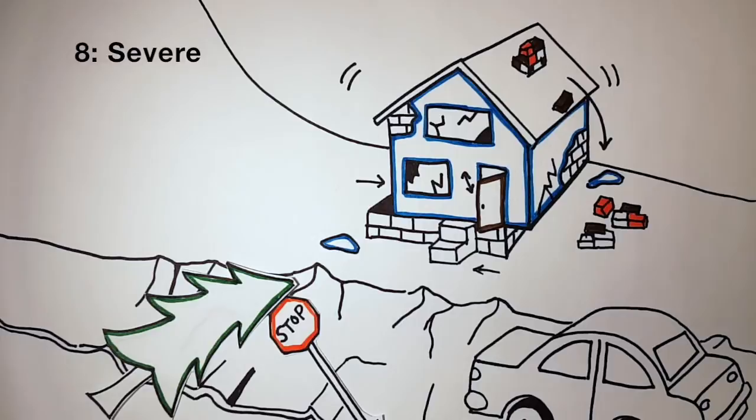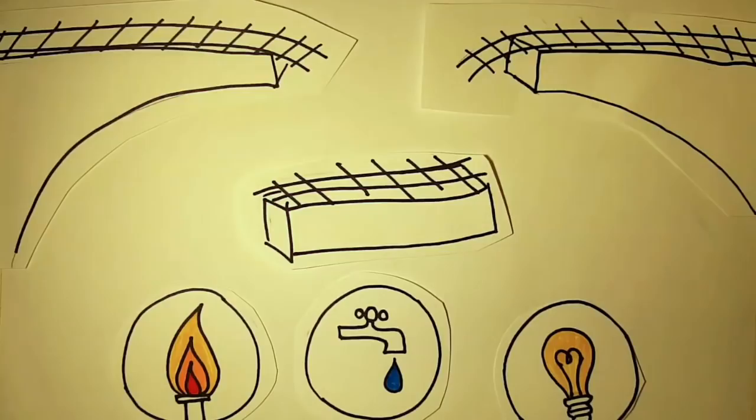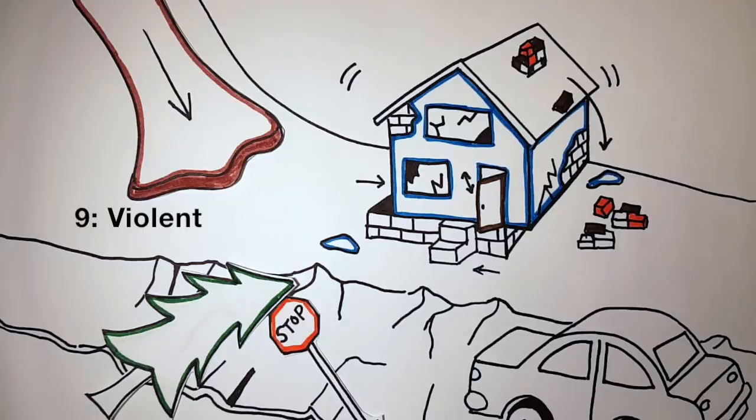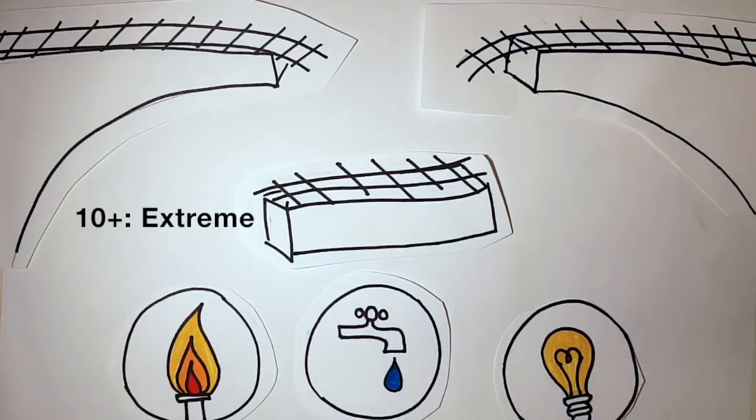Level 9: Violent shaking will lead to landslides, breaking pipes, and badly damaged homes. Level 10 will cause extreme shaking and widespread destruction. Some bridges will collapse and railways will bend. Power and other utilities will be badly damaged and non-functioning.